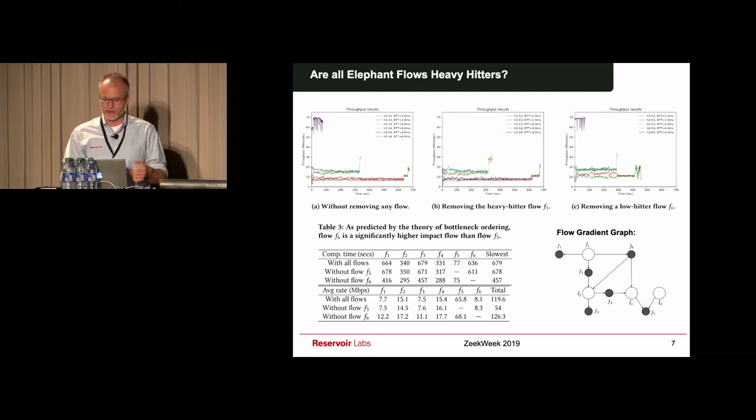Now, if we remove flow 5 from the network, which is the biggest flow, you can see that there is no effect whatsoever on the rest of the flows. The flow completion time stays intact. But if you remove flow 6, you actually see that the flow completion time significantly improves, almost reaching from 679 to 457, about 40% reduction.